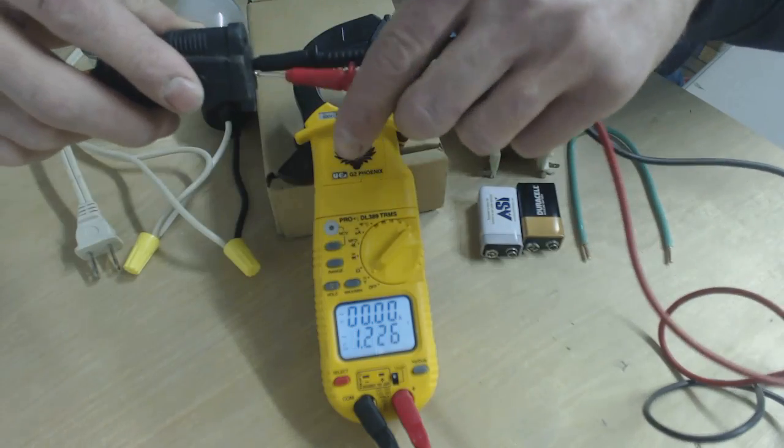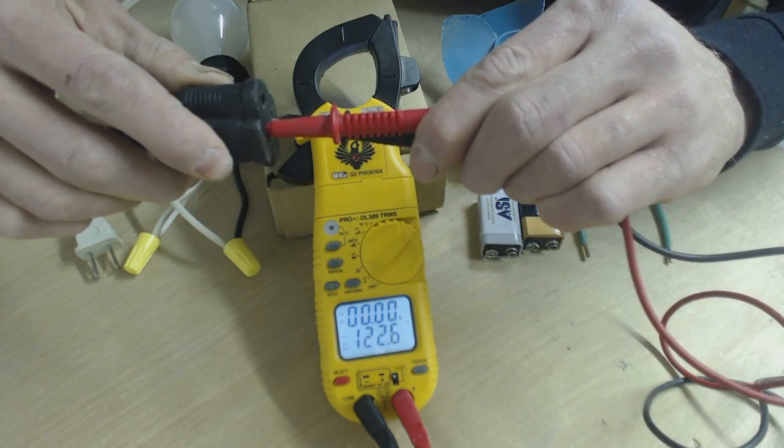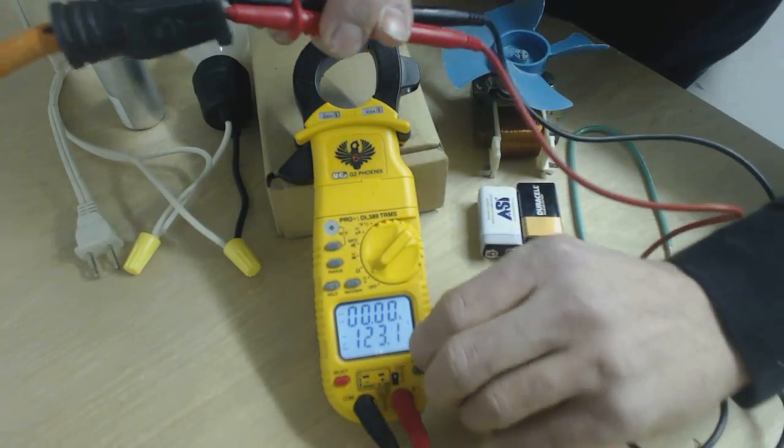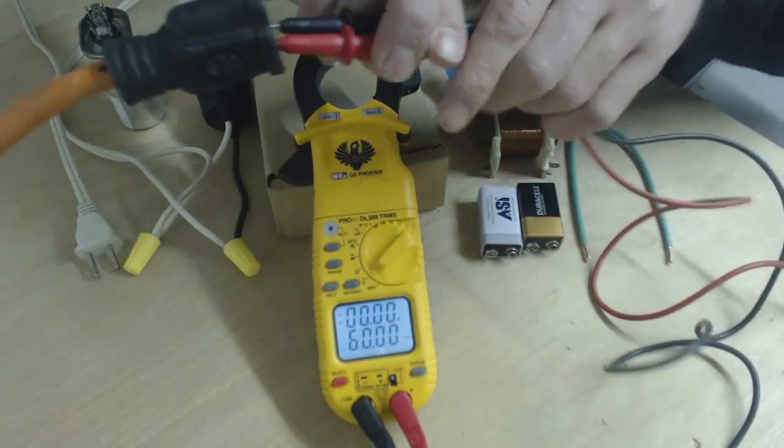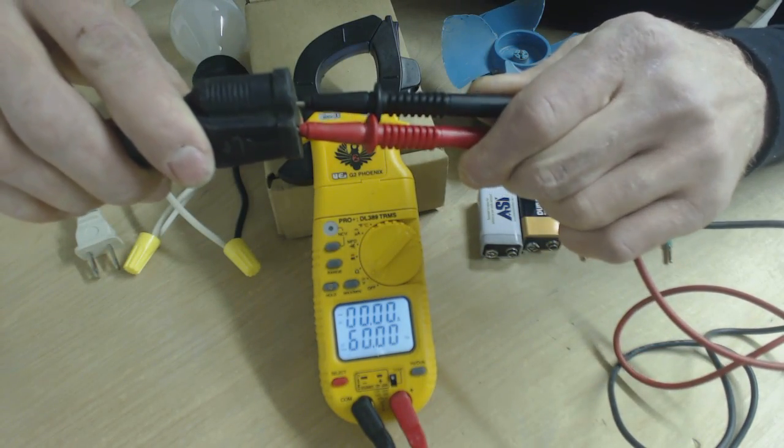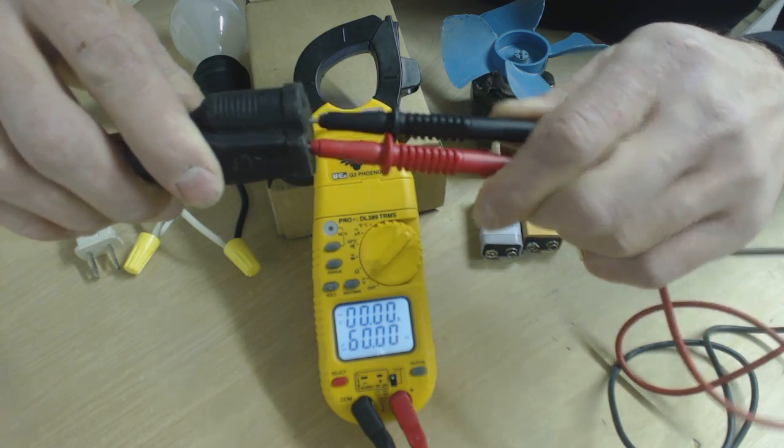So the first thing that we're going to do is we're going to test this plug end right here. We're going to read 122.6 volts, so that is good. We can then go ahead and check the frequency and that should be roughly 60 hertz. If it's off by too much, then you would need to call the electric company.